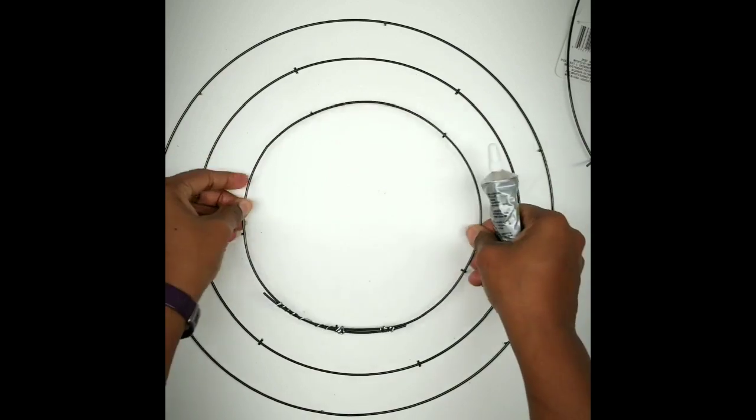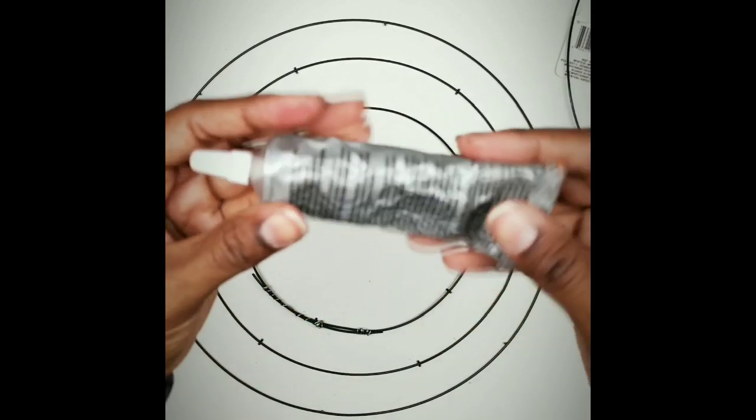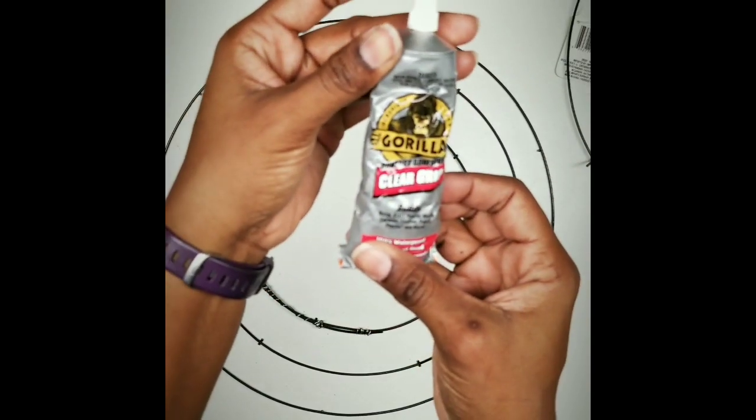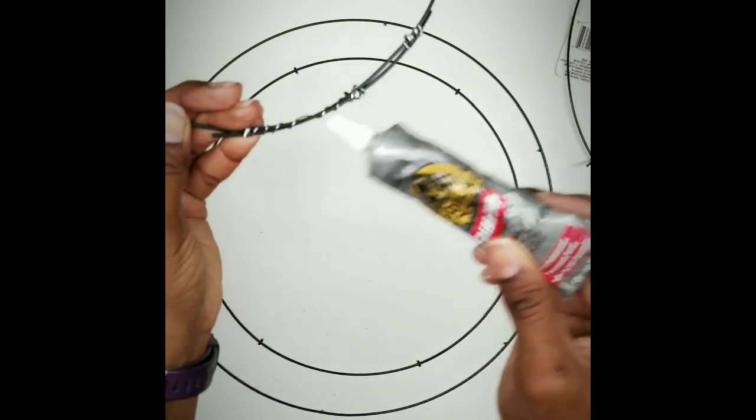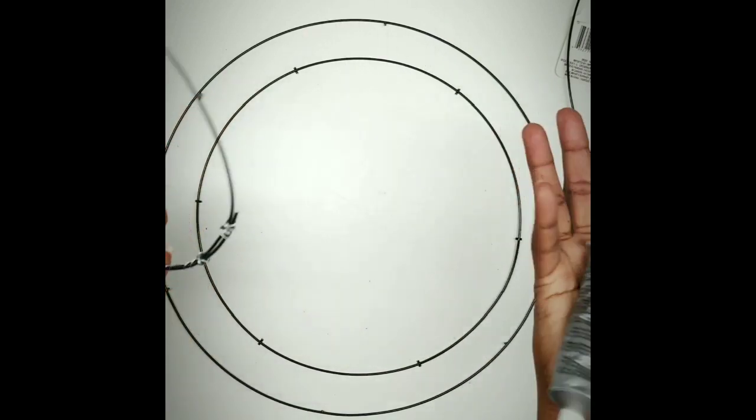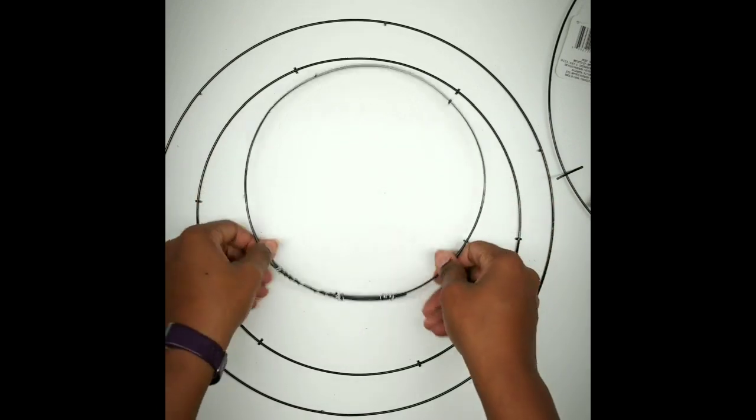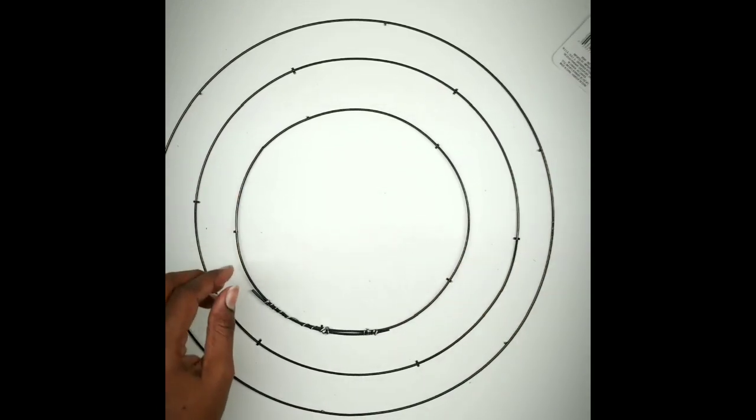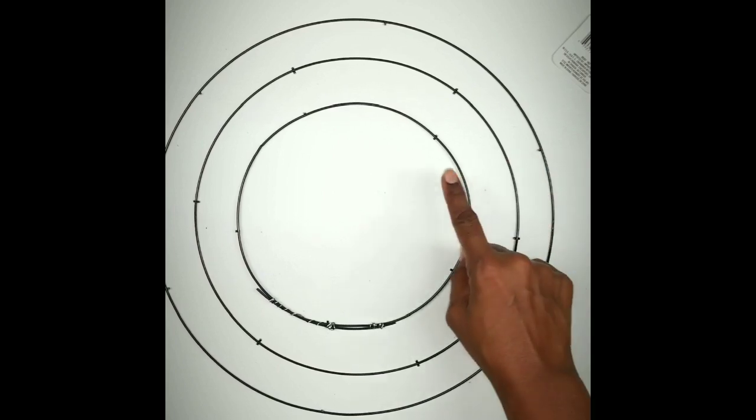Now once that's all secure, if you would like to add some additional adhesion, you could use Gorilla Glue or E6000 Super Glue. But I've wrapped it pretty tight, pretty confident that it'll stay. Give it a little tug, it seems to be pretty secure, so I'm not going to add any additional adhesive to my ring. I have all three rings now completed.